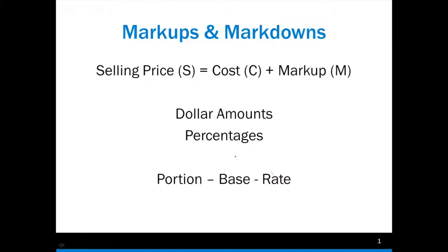Everybody already knows how to do this. If you have trouble with it, just think about what happens when you walk into a store. Let's say you're buying a sweater and the sweater is on sale for $100. The store had to pay something for it — that's their cost. The difference between their cost and what they're selling it for is the markup. And you pay the $100 plus tax. You already know all of this.